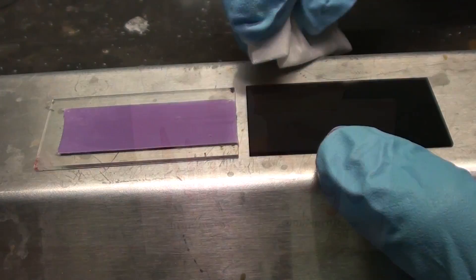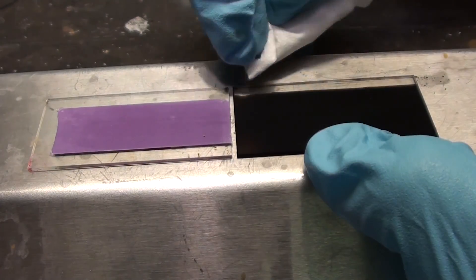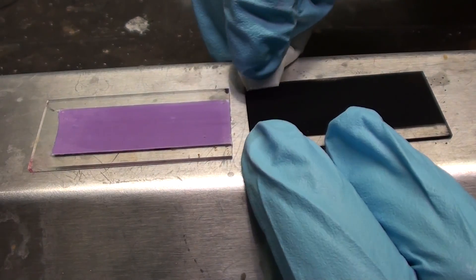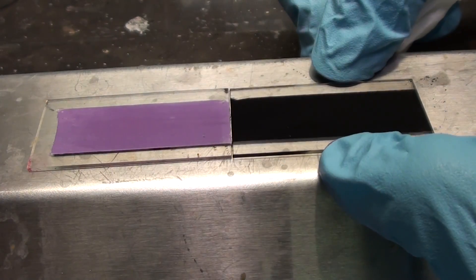Now using the dyed titanium dioxide as a guide, carefully wipe away the soot from the edges. The idea is that we want it to match up with the titanium dioxide layer and not on the conductive sides. This is to prevent shorting of the cell.